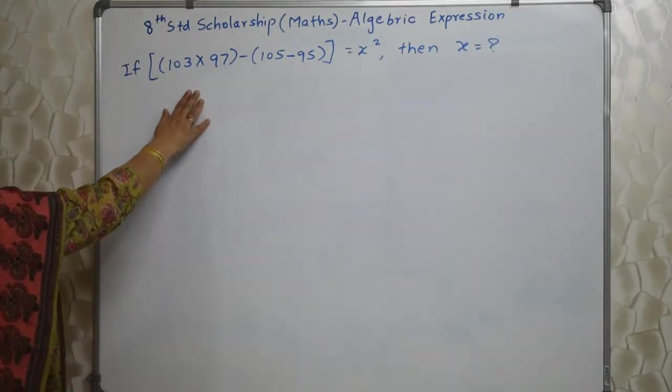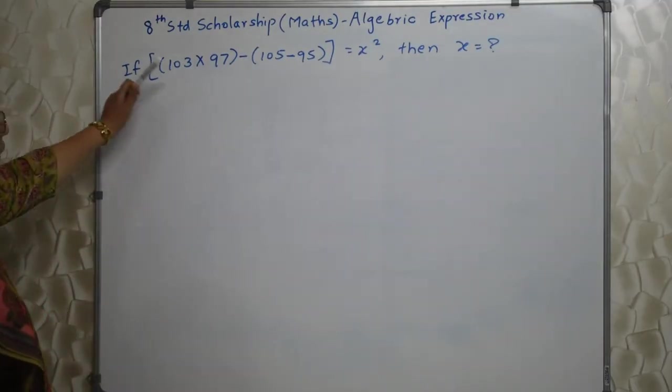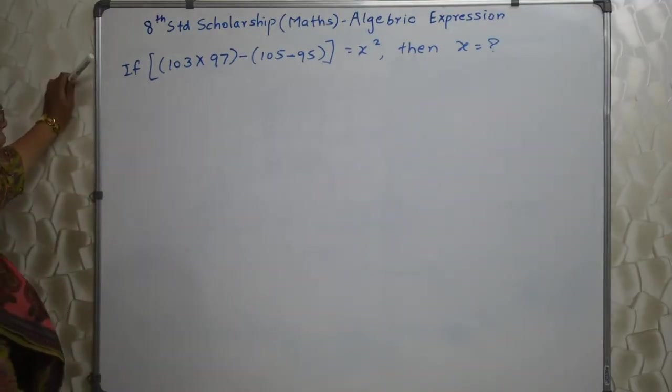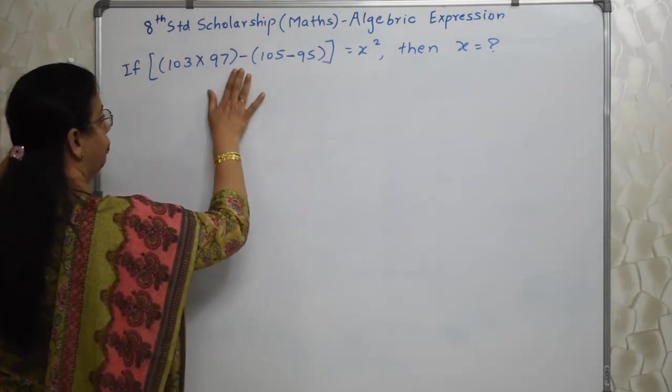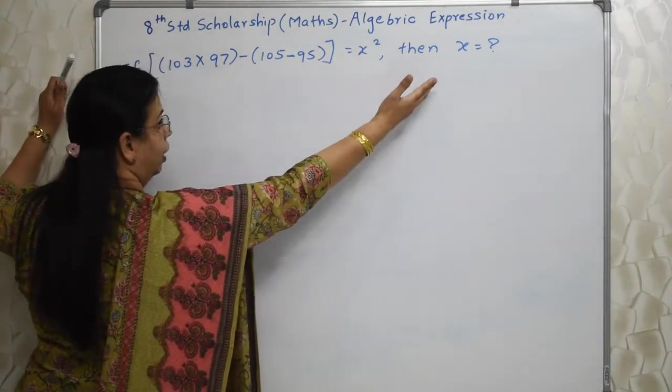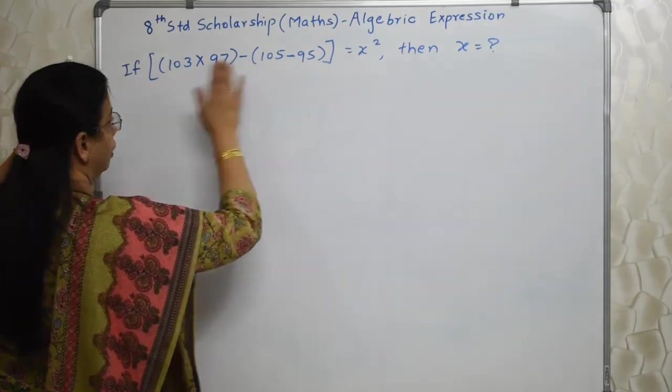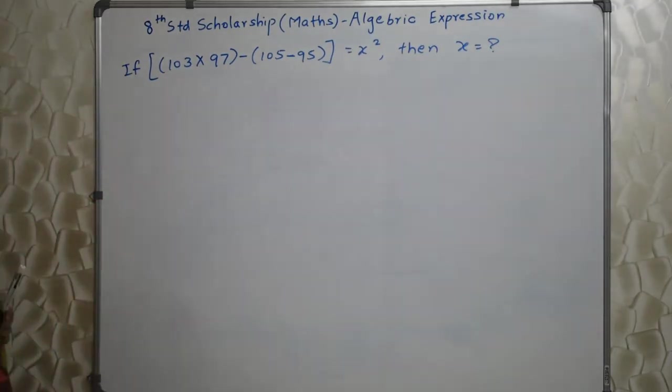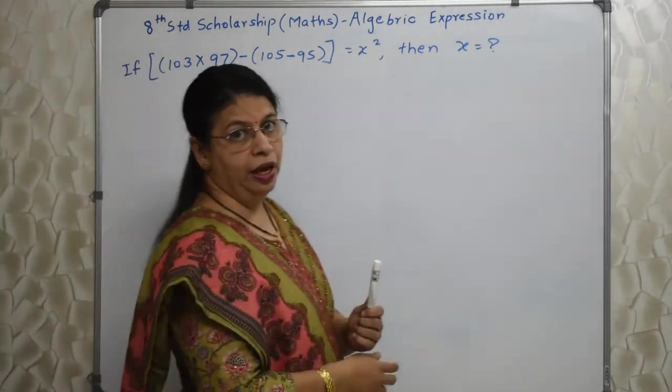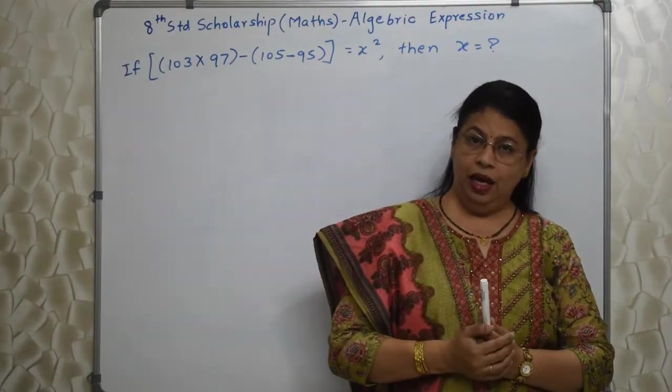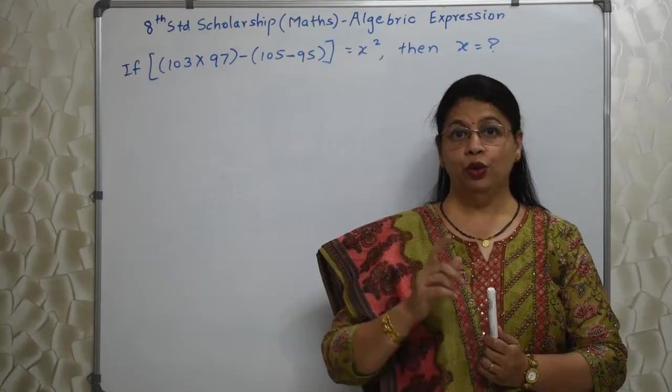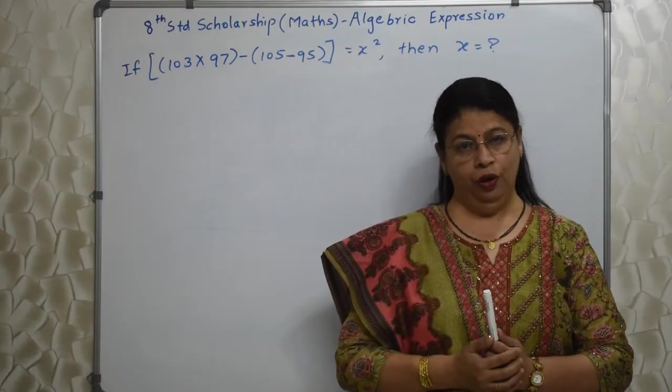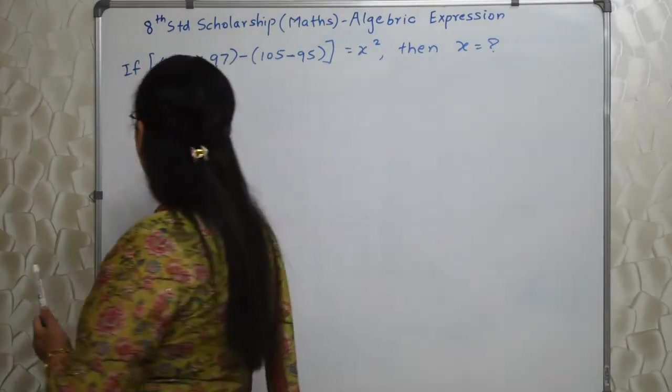Students read this sum properly. See in these kinds of sum I have seen many times students multiplying this and then multiplying this and then doing the subtraction and then finding out the square root. That is not the way it should be done. Students remember in algebraic expression identities and indices are very important because you have to use them from time to time. So let's do it here.